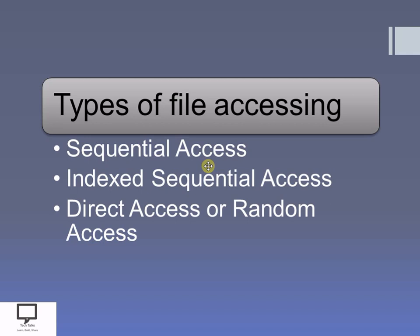Basically there are three types: sequential access files, index sequential access files, and direct access files — also called random access files. I have already explained these in separate videos. I am providing a shortcut link for the playlist of types of files in C++ in the description. Please go through that, as knowing all these file types is a prerequisite for this session.